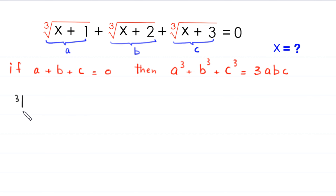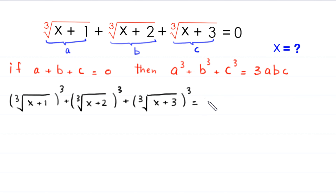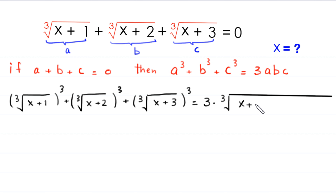This will become: cube root of x plus 1, cubed, plus cube root of x plus 2, cubed, plus cube root of x plus 3, cubed, is equal to 3 times cube root of x plus 1 times cube root of x plus 2 times cube root of x plus 3. We can write the product of these three cube roots under one cube root, giving us cube root of (x plus 1)(x plus 2)(x plus 3).